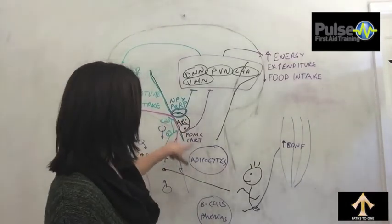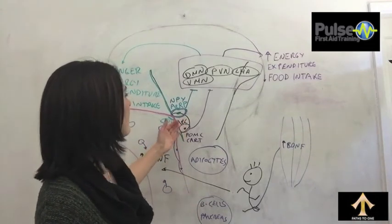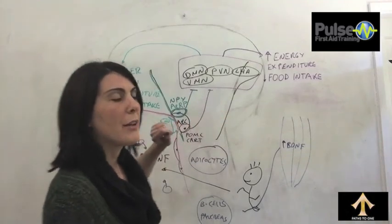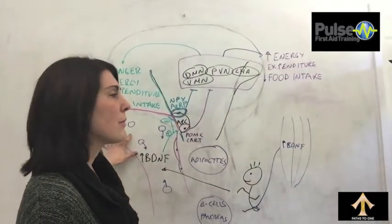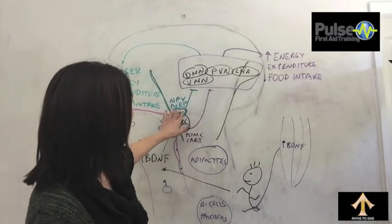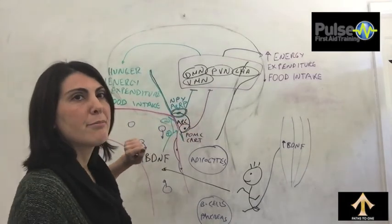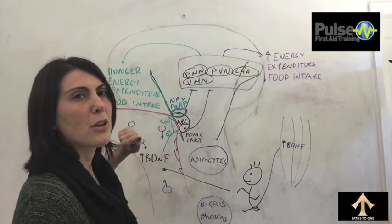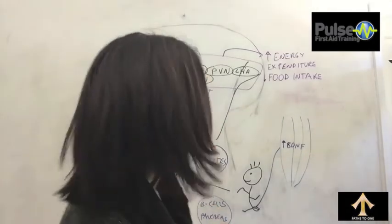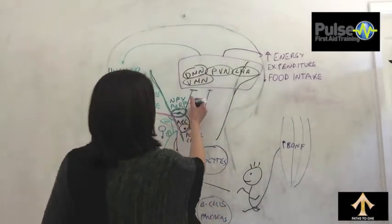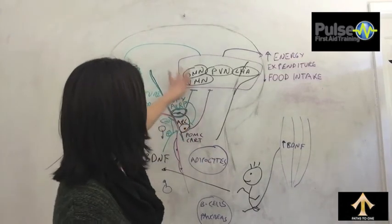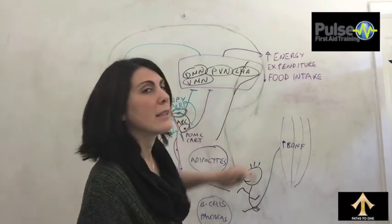For example, there is leptin and insulin that are being released and they act to activate this pathway here. On the other hand, you might have ghrelin in the circulation because your stomach is empty. And so that will be acting on this pathway here, the agouti-related peptide and neuropeptide Y pathway to make you hungry and eat more. The other thing to note is that these neurons will also inhibit this pathway. So when this pathway is activated, this one is inhibited.